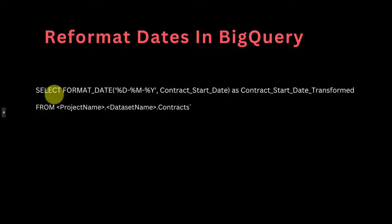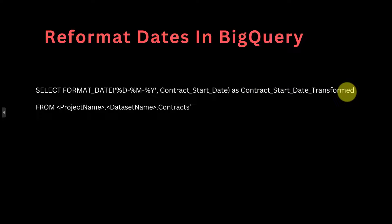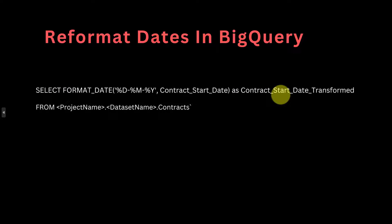Since we are doing this transformation within a SELECT statement, what we're basically doing is creating another column — we're not changing the format in the original column. We are creating a new column using this SELECT statement which has the new date format. I've named that new column contract_start_date_transformed. The existing column format remains intact, and the new column manifests this new format.